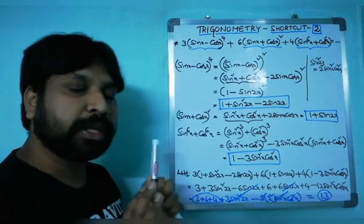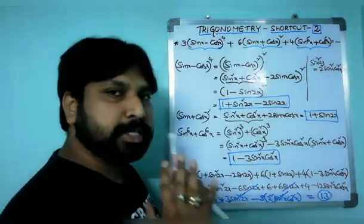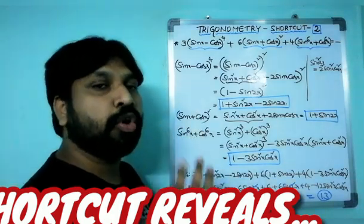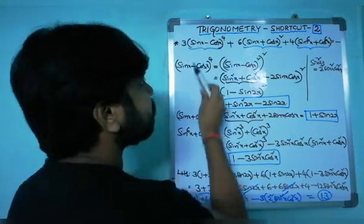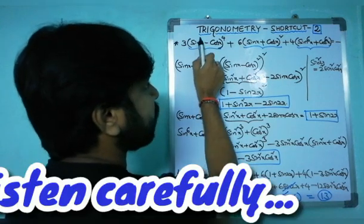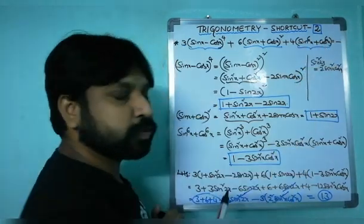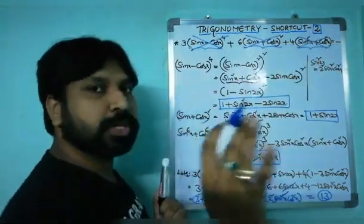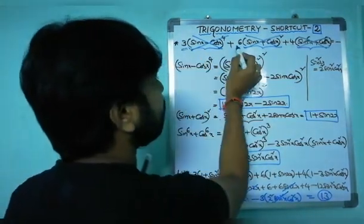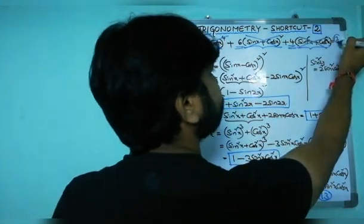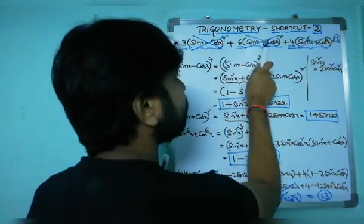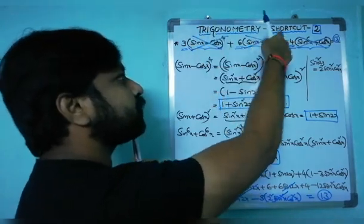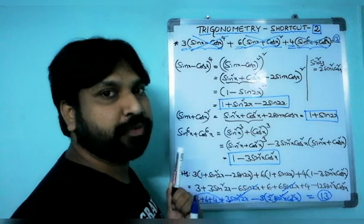So the answer is 13. That was the full method. Now I want to reveal the shortcut. Whenever this kind of question has sine and cosine raised to the same power — like sin⁶x and cos⁶x — you don't need to consider the trigonometric function at all. Just use the constants as your answer.